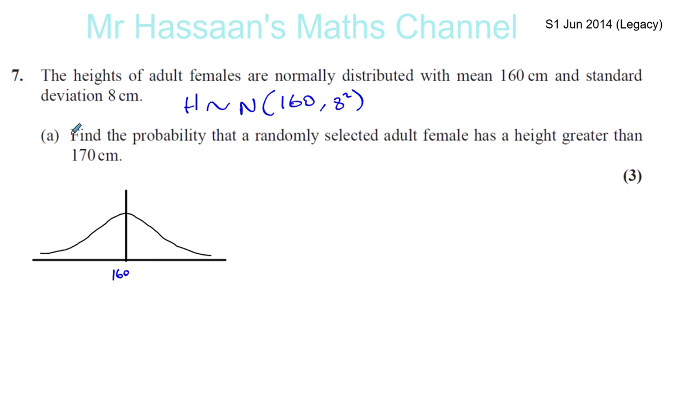And it says, find the probability that a randomly selected adult female has a height greater than 170. So we know 170 is somewhere over here, it's to the right, 160 of course, bigger than that.